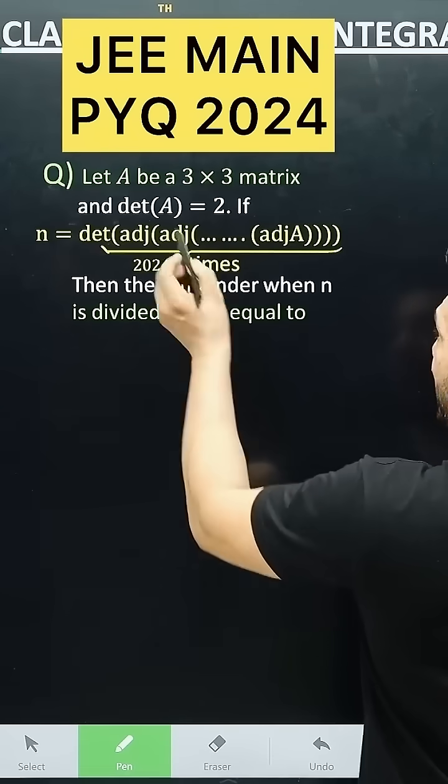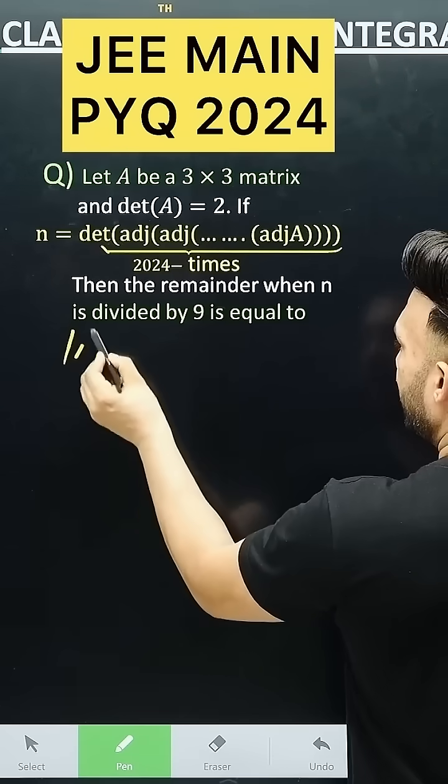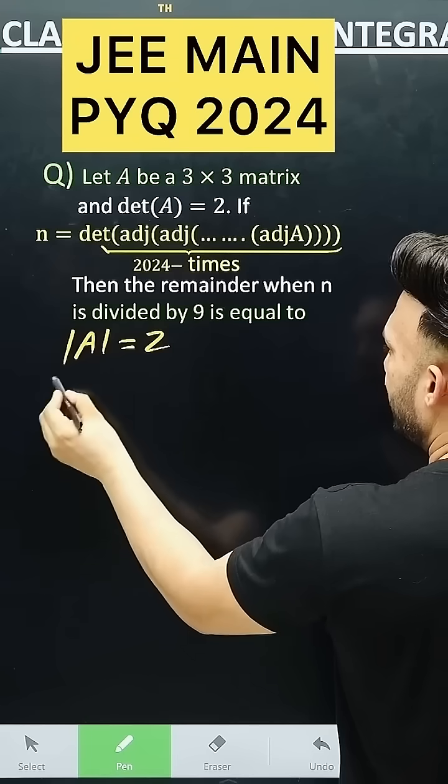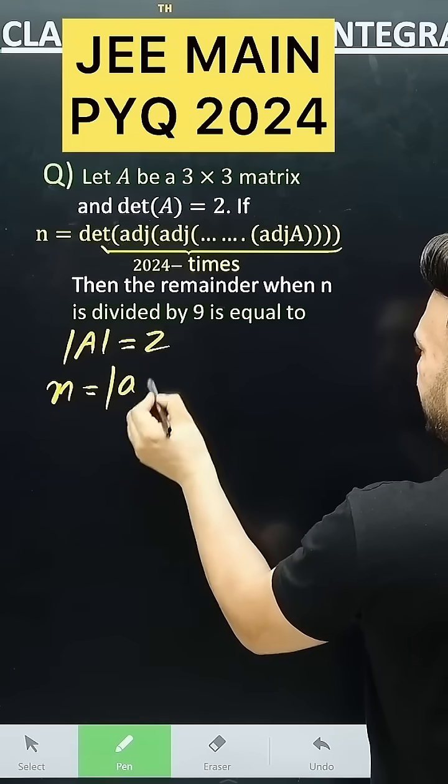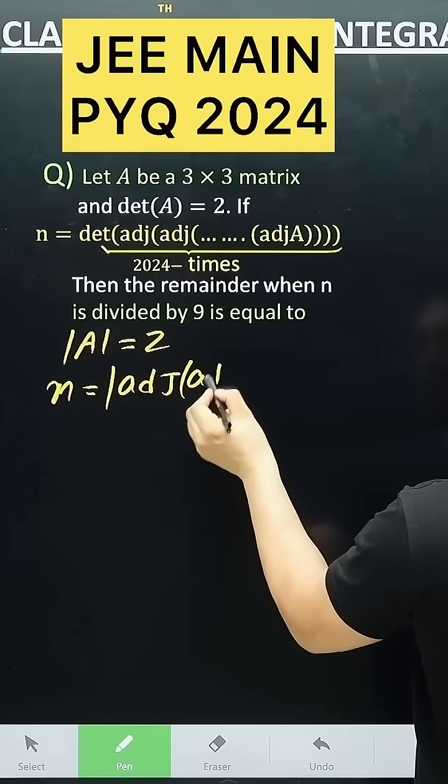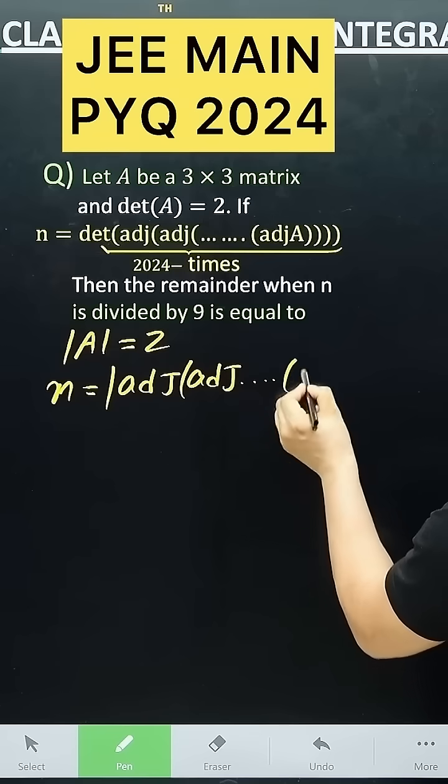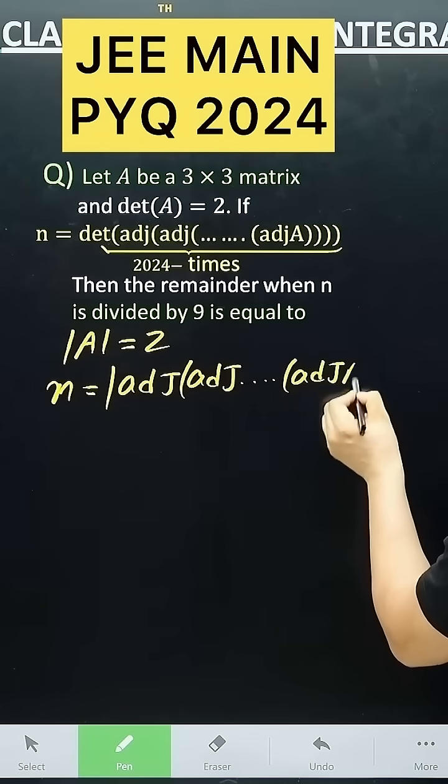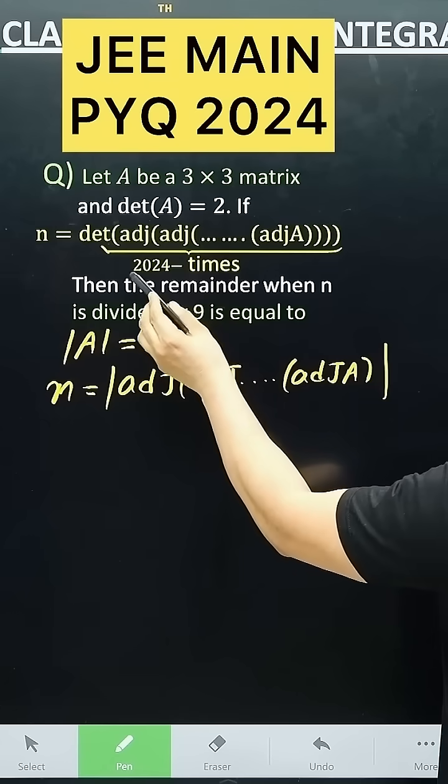You have the determinant of A. You are given n. Adjoint, adjoint, up to so on, adjoint A. What is this adjoint? It is 2024 times.